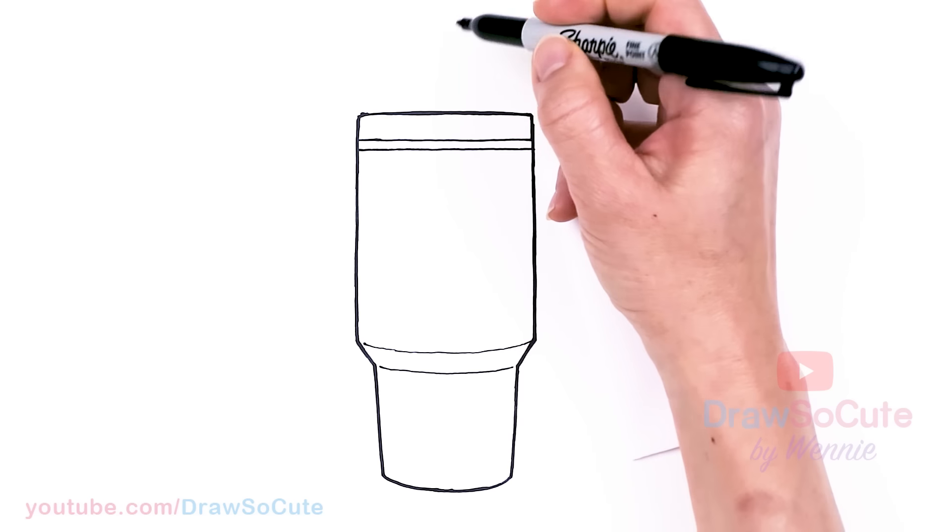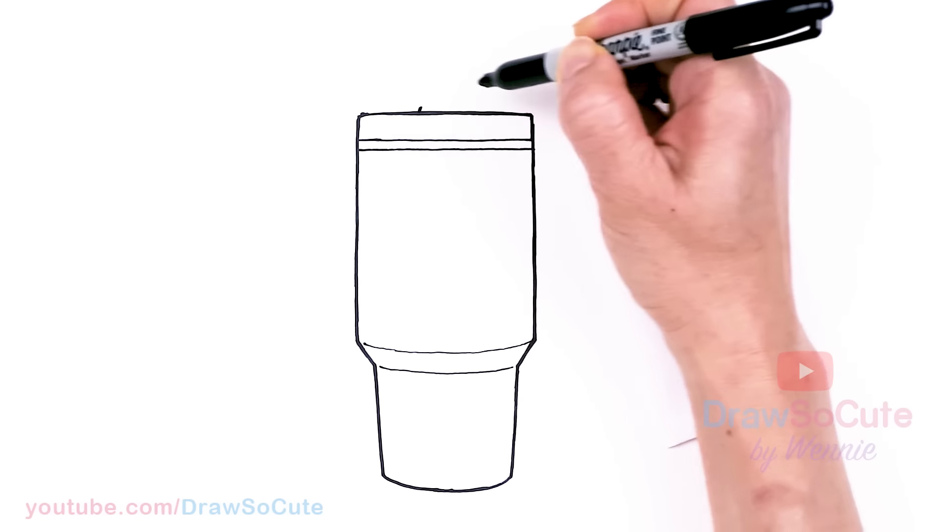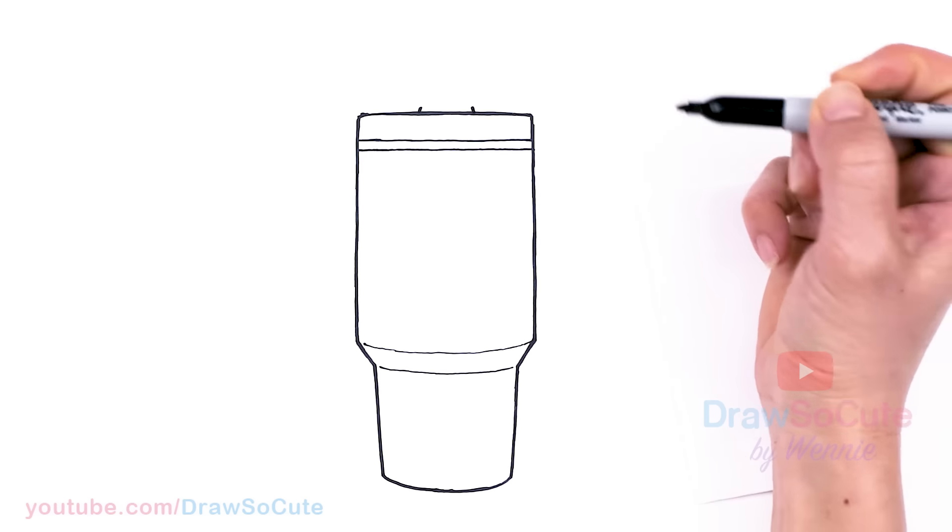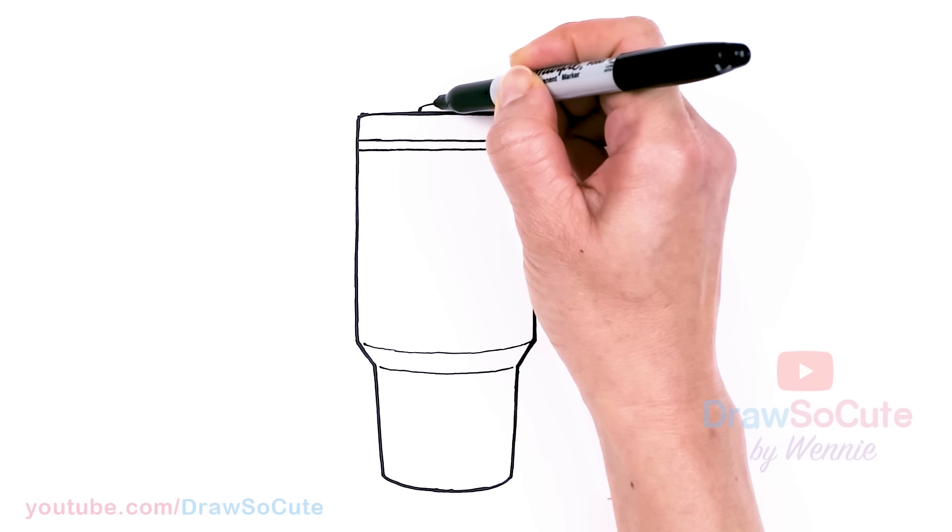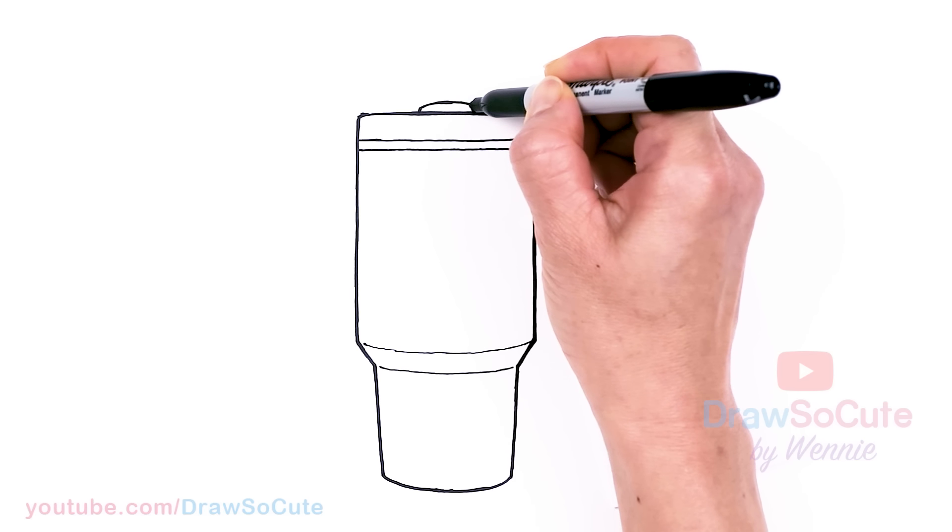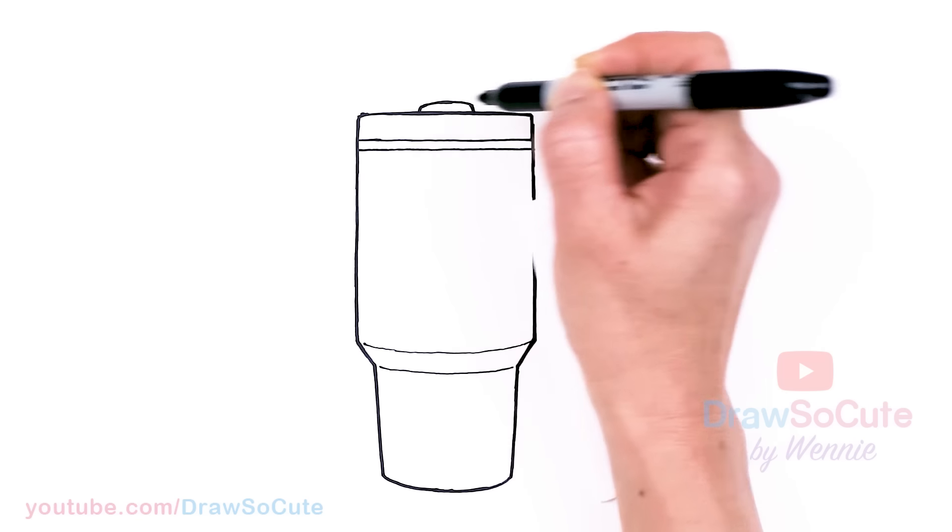And then at the top here, where the straw comes from, we're going to draw a small little angle line. And I just want to make sure I'm kind of centering it. So say about here and here, and then I'm going to connect it with a curve, soft curve that goes across.